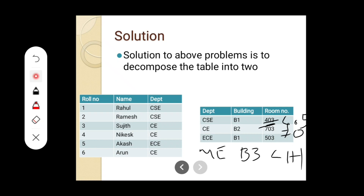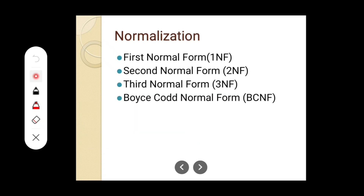Before leaving, I will explain the different types of normalization concepts we are going to study. First one is first normal form 1NF, second normal form 2NF, third normal form 3NF, and Boyce-Codd normal form BCNF — it is not represented as fourth normal form; instead we have Boyce-Codd normal form BCNF. So four types of normalizations are there. Today you just go through the key concepts: super key, candidate key, prime attribute, non-prime attribute, primary key, foreign key, and also the different anomalies — deletion, update, and insert anomaly — and how the solution can be made. In the next class, we are going to see all these normalization concepts in detail.